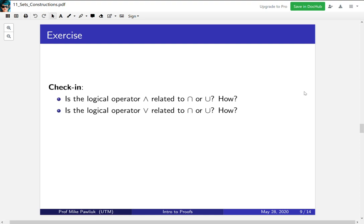In other words, the intersection is the first one, and it's the same orientation as the wedge, as the AND. Similarly, the union is the same as OR. It's the same orientation as the OR. These are how these two things relate.